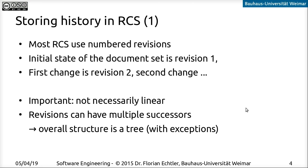In general, these systems manage some kind of history, and the history is often numbered. Revision one is the very first set of documents you import into the repository, then when you change something you get revision two, and so on. Importantly, this does not have to be linear — a revision can have multiple successors and multiple predecessors, so the structure is more like a tree or a directed acyclic graph. I'll show you a visualization of that in a moment.